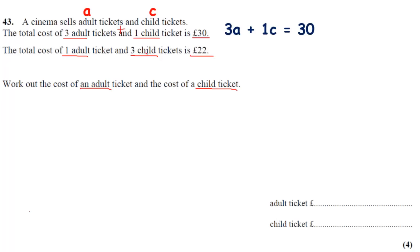1 adult ticket and 3 child tickets, that's 1A and 3C. 1A plus 3C equals £22. Those are my equations formed. The first I'm going to call equation 1, the second equation 2. What I'm going to do is focus on getting rid of the Cs. That's something quite conventional we use in class.